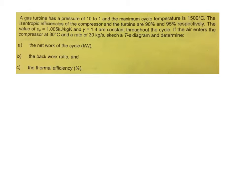Given to you the value of Cp is 1.005 kJ per kg·K, and your gamma is 1.4, constant throughout the cycle. If the air enters the compressor at 30 degrees C at a rate of 30 kg per second. First you need to sketch the TS diagram, and you need to determine: the net work of the cycle in kilowatt — where net work is your turbine work minus compressor work — the back work ratio, which is your compressor work over turbine work, and the thermal cycle efficiency of the overall system.